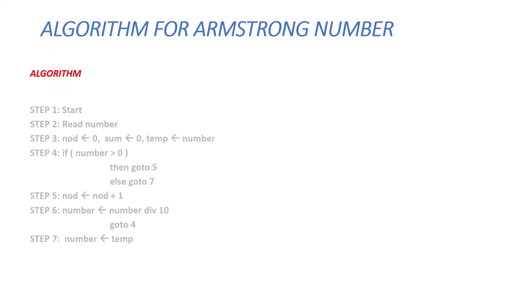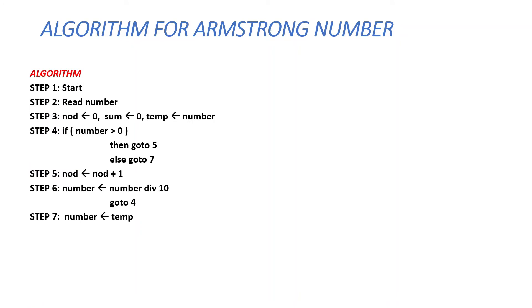Now let us see the algorithm for Armstrong numbers. In Step 1 we start. In Step 2 we read the number. In Step 3, the number of digits (nod) is assigned 0, sum is assigned 0, and a temporary variable temp is copied from number. In Step 4, it checks the condition: if number is greater than 0, if true it moves to Step 5 where nod is incremented by 1.